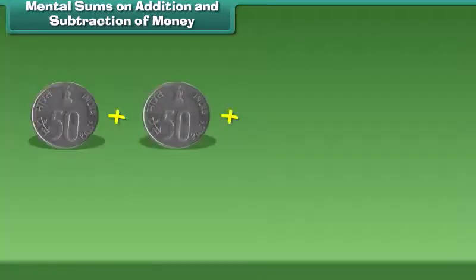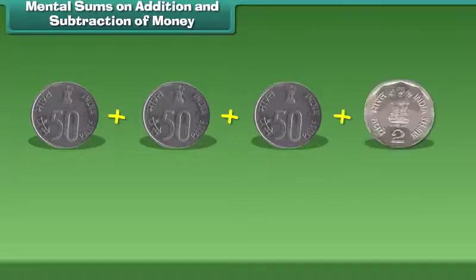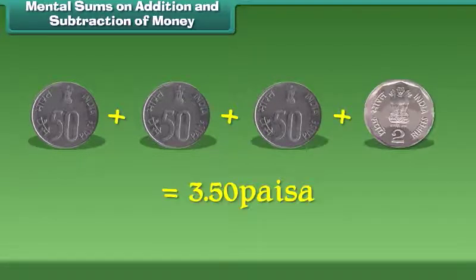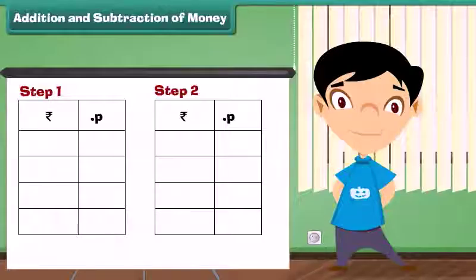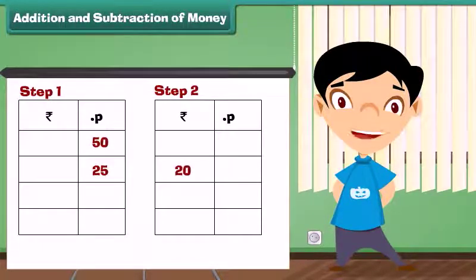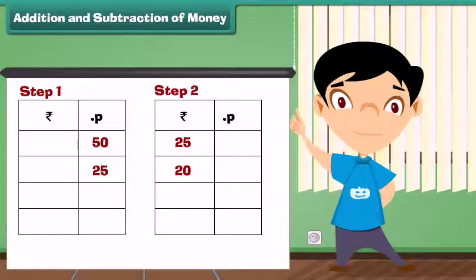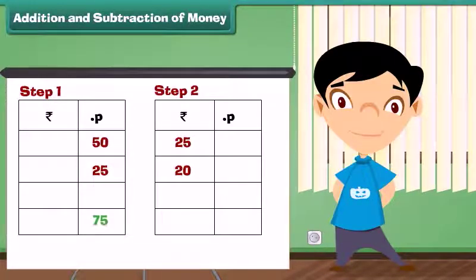Now I have 3 fifty-paise coins and a 2 rupee coin, which is equal to 3 rupees 50 paise. Let us learn how to add 25 rupees 50 paise and 20 rupees 25 paise. Step 1: Add the numbers in the paise column — 50 plus 25 is equal to 75 paise. Write 75 under the paise column.